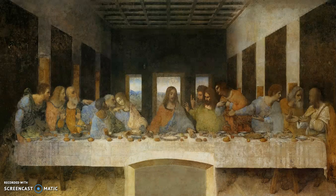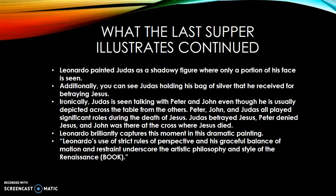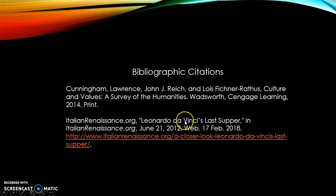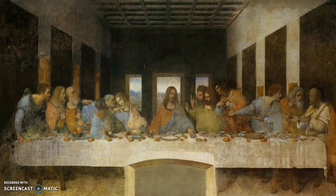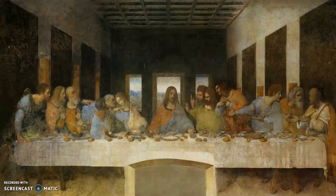Some emotions have been captured in the Last Supper painting, such as Philip protesting, John becoming sorrowful, and even Christ, who is accepting what must be done. Leonardo painted Judas as a shadowy figure where only a portion of his face is seen. Additionally, you can see Judas holding his bag of silver that he received for betraying Jesus.